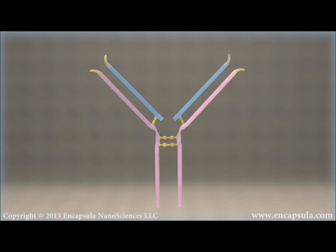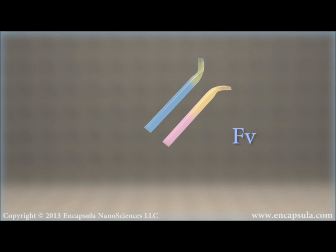The variable domain is also referred to as the FV region and is the most important region for binding to antigens. A single-chain variable fragment, or scFv,